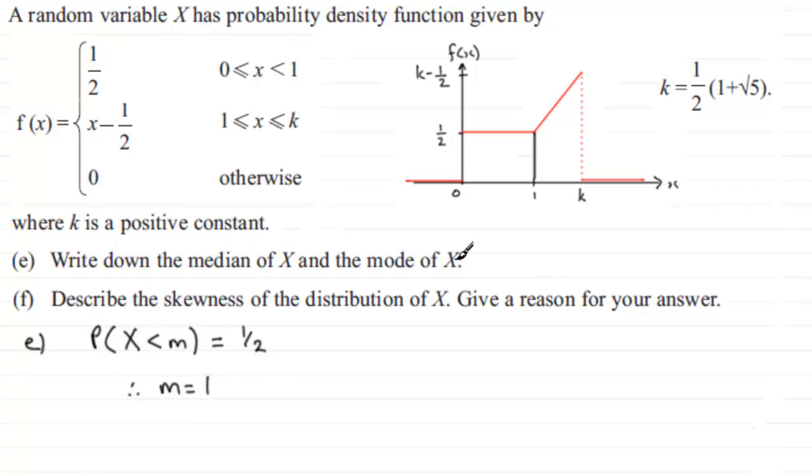Now the mode of X, well on a probability density function, it's always the value that gives us the highest point on the graph. The highest point is here and that corresponding value is k. So the mode then is going to be equal to k, or we worked out the value of k in an earlier part of the question. It was a half multiplied by 1 plus root 5. So any of those two answers ought to be okay.